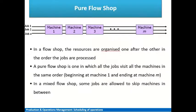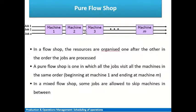In a flow shop, we have a sequence of machines arranged, and as jobs arrive — meaning customers place orders for manufacture of a particular product or spare part — these jobs are processed in sequence on different machines. The question of which job should be taken first and which last means their ordering or ranking needs to be assessed.